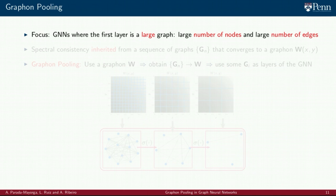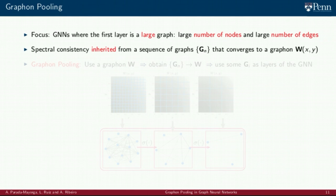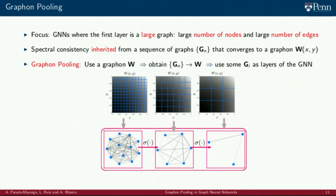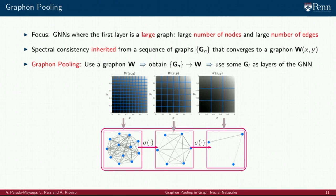We now introduce graphon pooling to consider GNNs where the first layer is defined by graphs where both the number of nodes and the number of edges is large. The central notion consists of exploiting the spectral consistency inherited from sequences of graphs that converge to a graphon. To do so, we use a graphon W and build, by sampling or integration, a sequence of graphs that converge to W. Then, the graphs in the layers of the GNNs are obtained as a subsequence of these graphs.